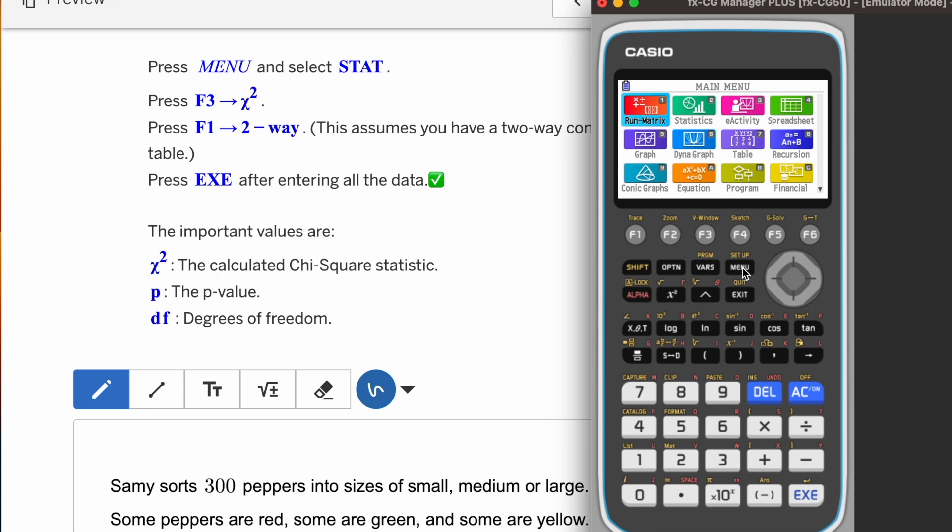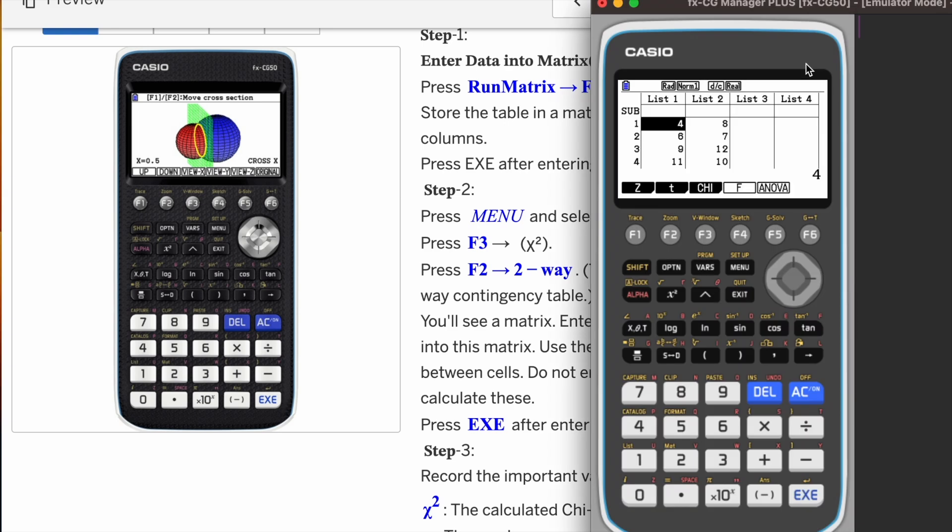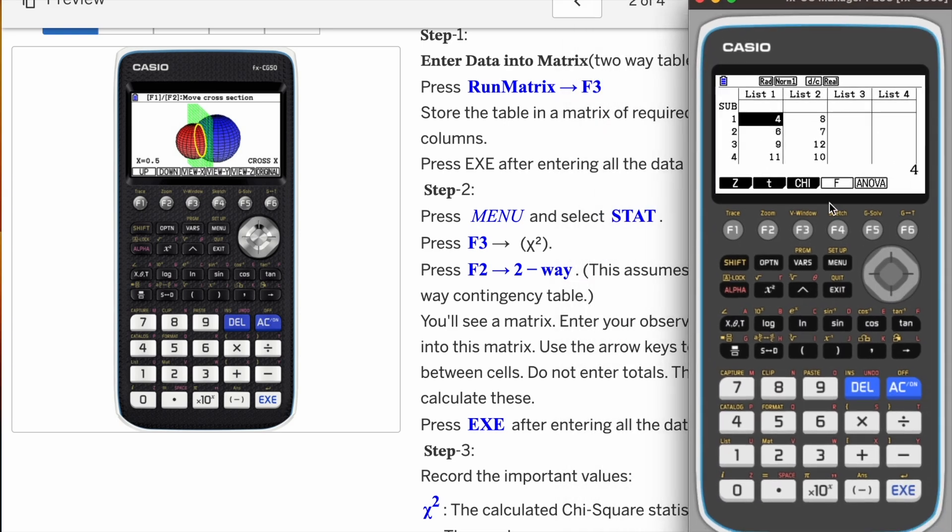Menu and then stat. Stat is the second option. Click. You will see some lists there, but you have nothing to do here, so just skip this and go direct to the test. Go to testing and you will find test. This is the test now, so go to F3 which is chi.